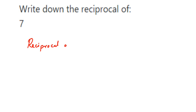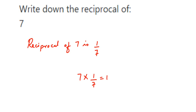Reciprocal of 7 is 1 by 7, because when you multiply 7 and 1 by 7, the 7s get cancelled and you get the answer 1. I hope this question is clear.